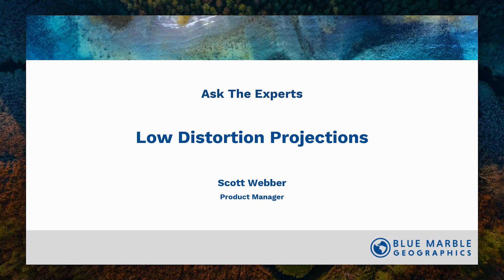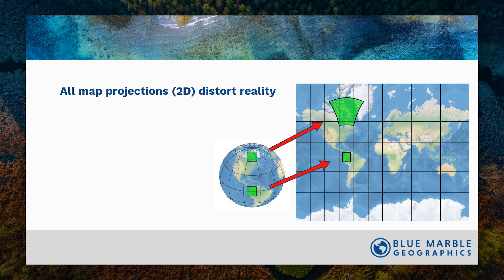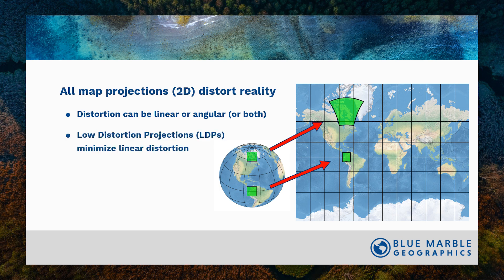So what are low distortion projections and why do we need them? Well, as we know, all map projections distort reality. And those distortions can be either linear or angular — basically distance or shape, or both. Low distortion projections, or LDPs as I'll call them, they minimize linear distortion — distortions in distance.